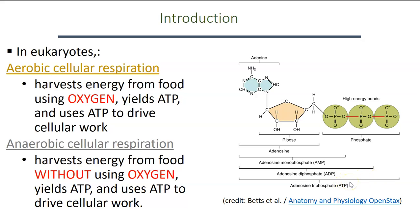ATP is the energy that our cells use in order to drive different processes in the cell that help us maintain homeostasis, such as active transport. This molecule — ATP — stores energy locked up in the high energy bonds between its phosphate groups.